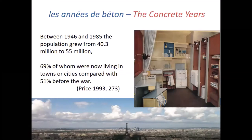They were also called les années de béton — the concrete years. Between 1946 and 1985, the population of the whole of France grew from just over 40 million to 55 million people. France now has a bigger population than Britain. 69% of those were now living in towns or cities, compared with 54% rural before the war. You can see the edge of Paris in my photograph from the Tour Montparnasse — that thin green belt, the Bois de Boulogne, now being taken over by new suburbs being built outside the Périphérique.